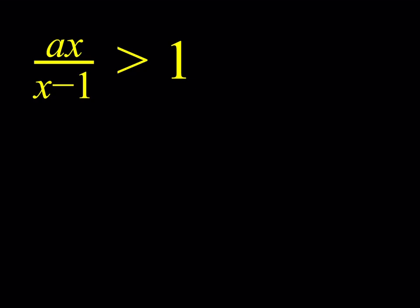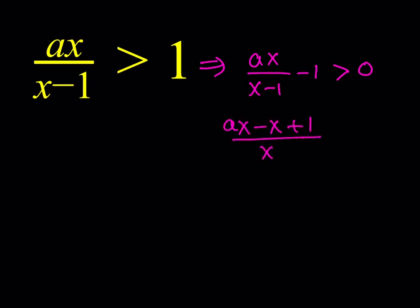Let's get started. What are we going to do first? We're going to take our expression and simplify it. Obviously, if you're solving an inequality, this is a rational type, so we have a numerator and a denominator. One of the things you don't want to do is multiply both sides by x minus 1, because you have no guarantee that x minus 1 is going to be a positive quantity — it could be 0, it could be negative. So what we're going to do is safer: we're going to subtract 1 from both sides. This way, we'll get a 0 on one side of the inequality, which is what we want. Then you make a common denominator: ax minus x plus 1 over x minus 1. You want this to be greater than 0.